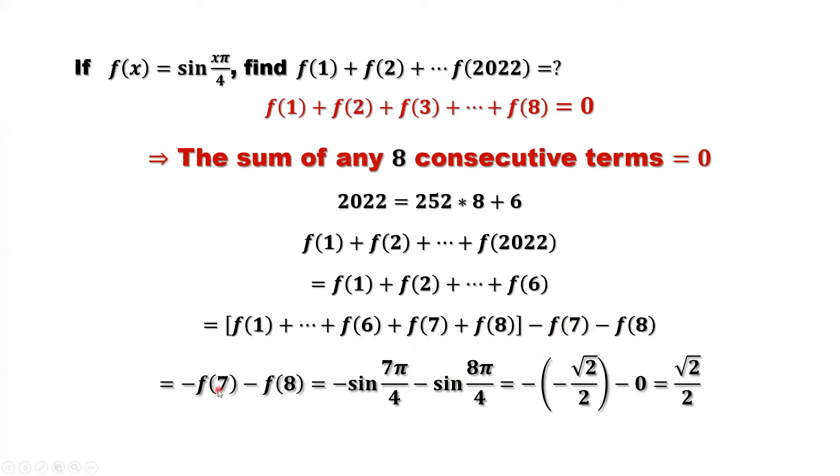So the last two is negative sine of 7 pi over 4, negative sine 8 pi over 4. 7 pi over 4 is in the fourth quadrant, which is negative. Negative negative cancel. That's positive. And 8 pi over 4, that's 2 pi. Sine of 2 pi, that's zero. So the final answer is square root of 2 over 2. This is the answer for the sum, the question.